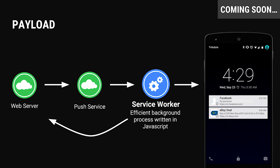The next exciting feature is payload support. Currently, when a push message arrives in the Service Worker, you have to make a network request back to the server to find out what happened. With payload support, your site will be able to include serialized JSON data with the push it sends to the push service. That data gets sent down and included when the event fires on the device, so you know immediately what to display without needing a server roundtrip.